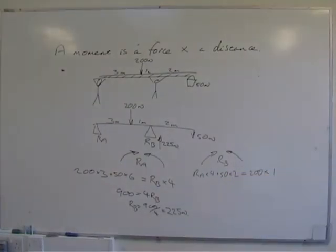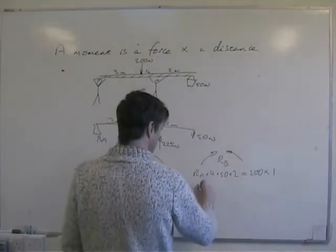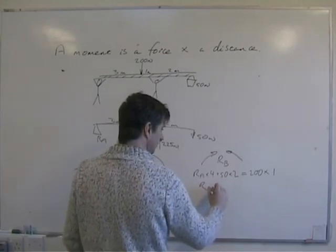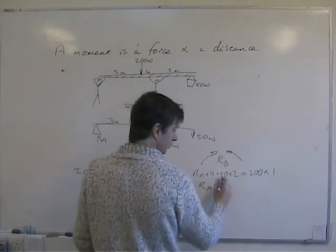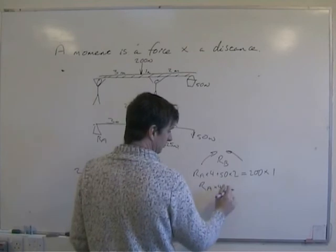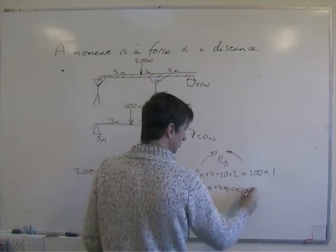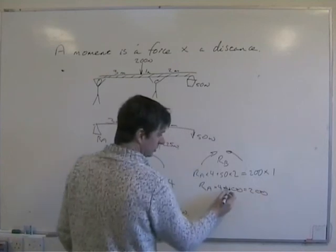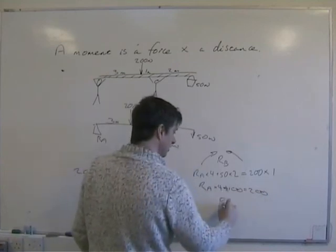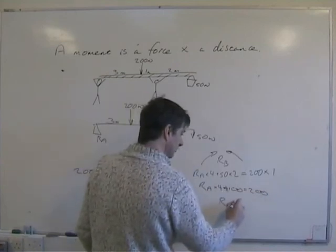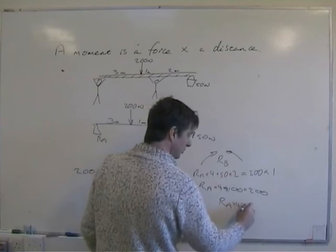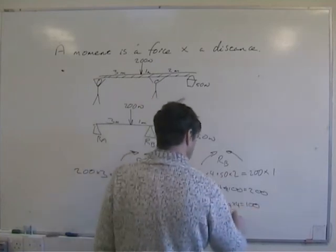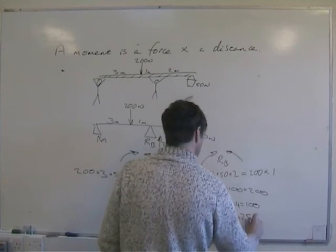Simplifying that, we have RA times 4, plus 100, equals 200. Now I've got to take that 100 over the other side, so RA times 4 equals 100. So RA equals 25 units.